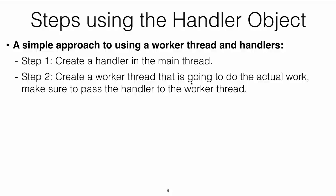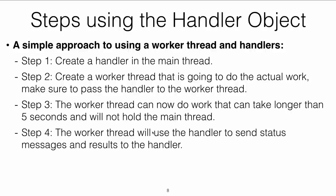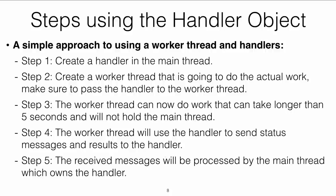Step two — create a worker thread that will do the actual work, and make sure to pass the handler to the worker thread. Either pass it explicitly, or if the worker thread is an inner class of the activity, it should have access to the handler variable. The worker thread can do work that takes longer than five seconds without holding the main thread, then use the handler to send status messages and results, which are ultimately received and processed by the main thread.